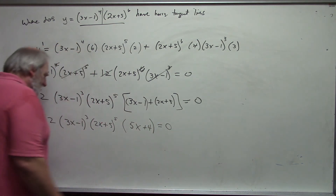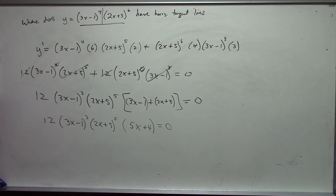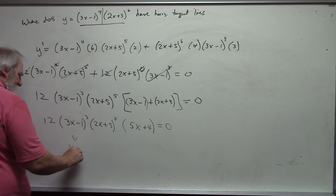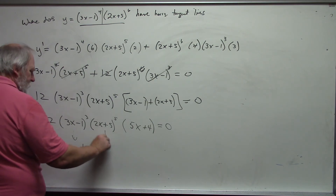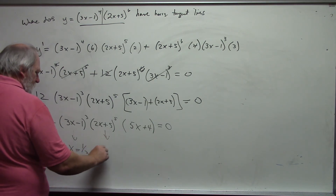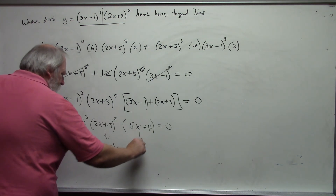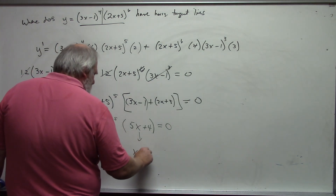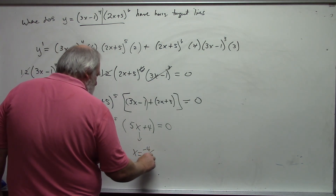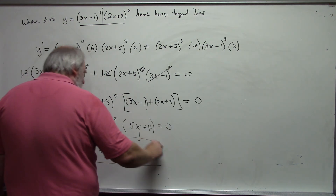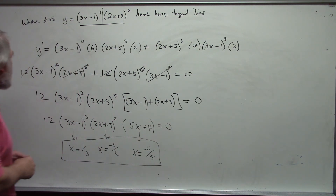Now I have a product equal to zero: 12 times 3x minus 1 cubed times 2x plus 5 to the 5th times 5x plus 4 equals zero. So the values that make this zero are x equals 1/3, x equals negative 5/2, and x equals negative 4/5. These are where I have horizontal tangent lines.